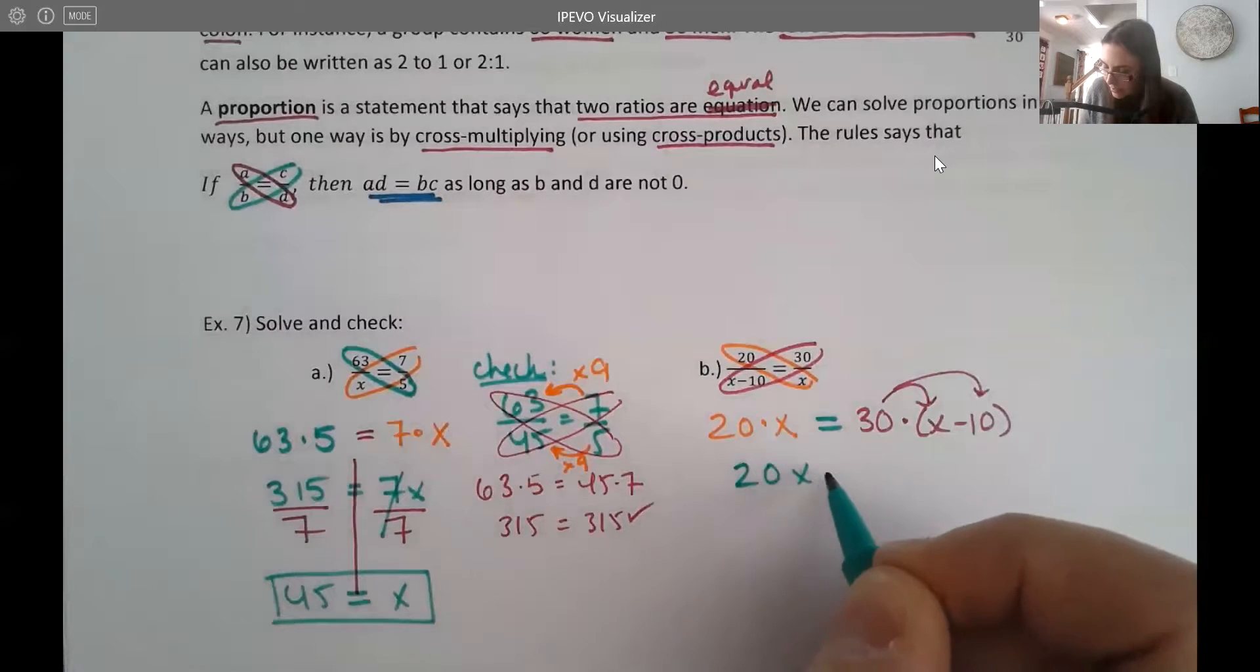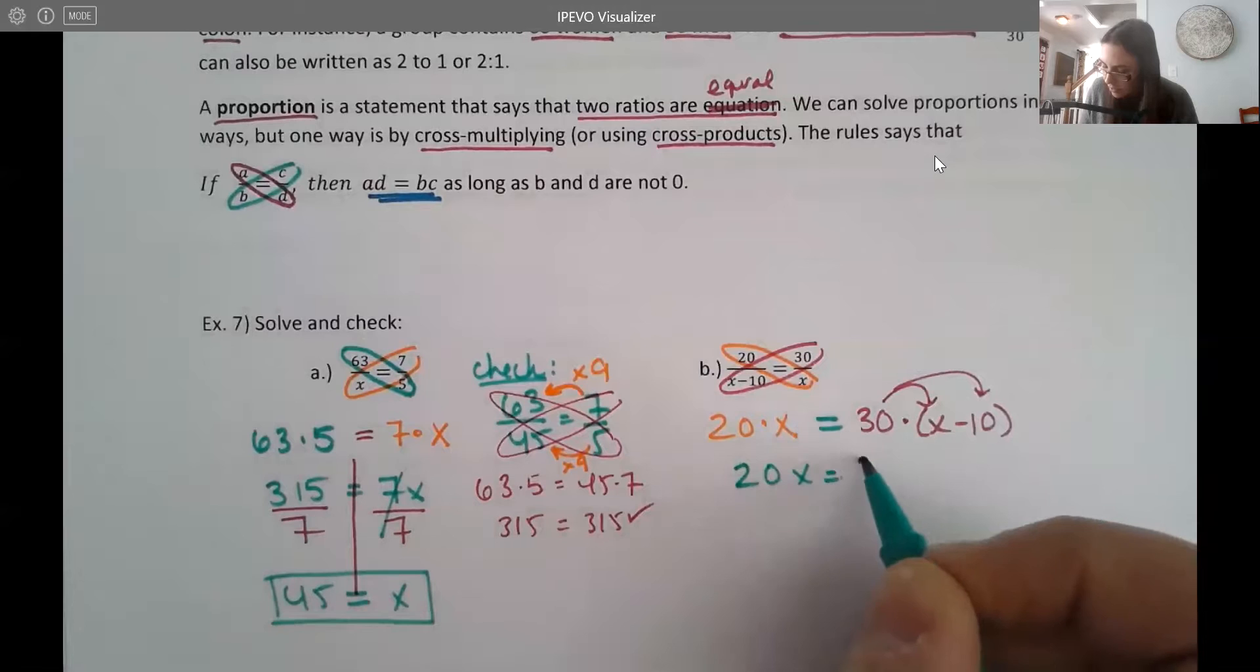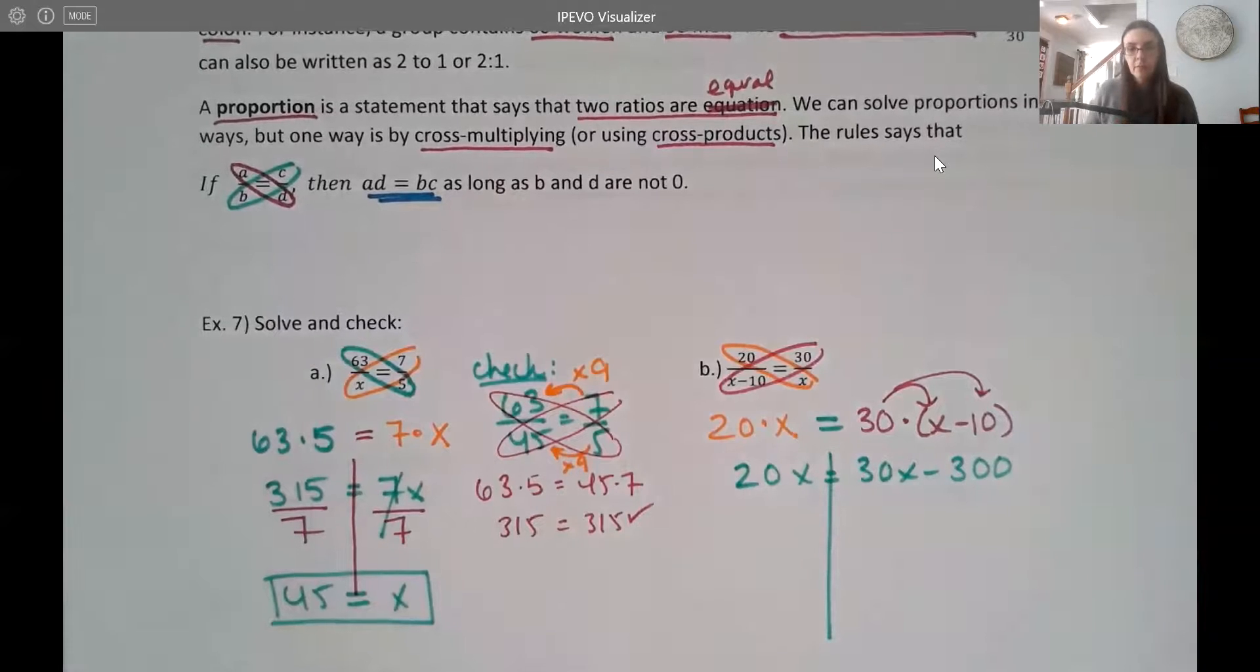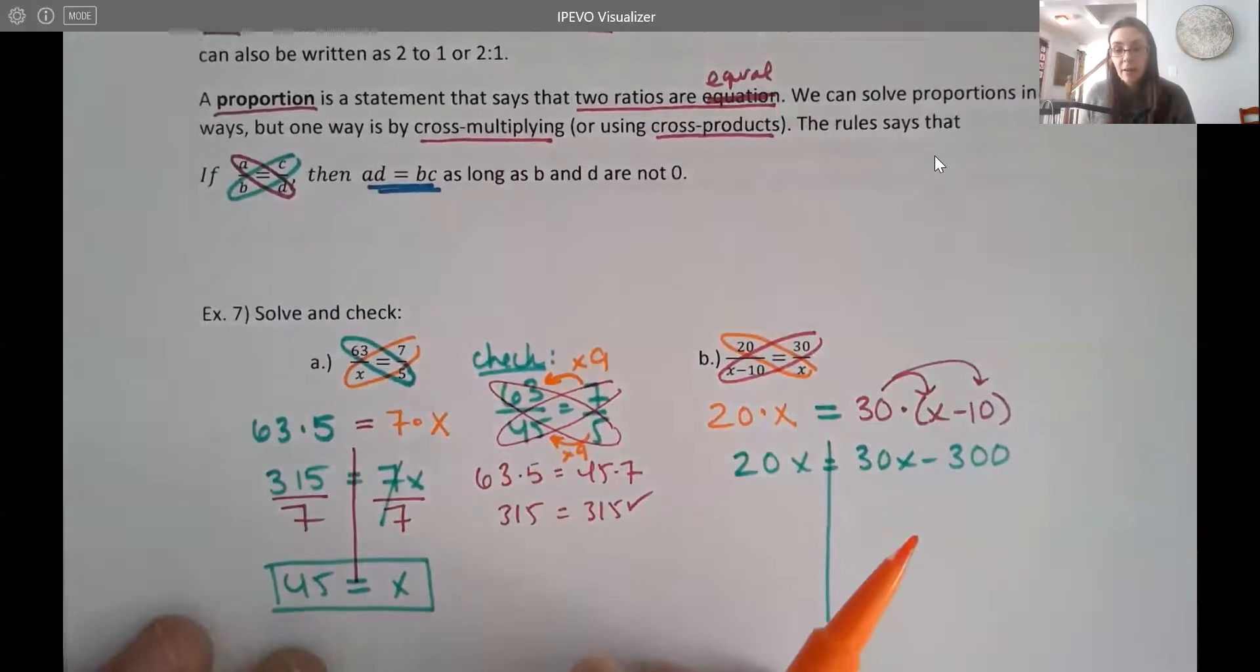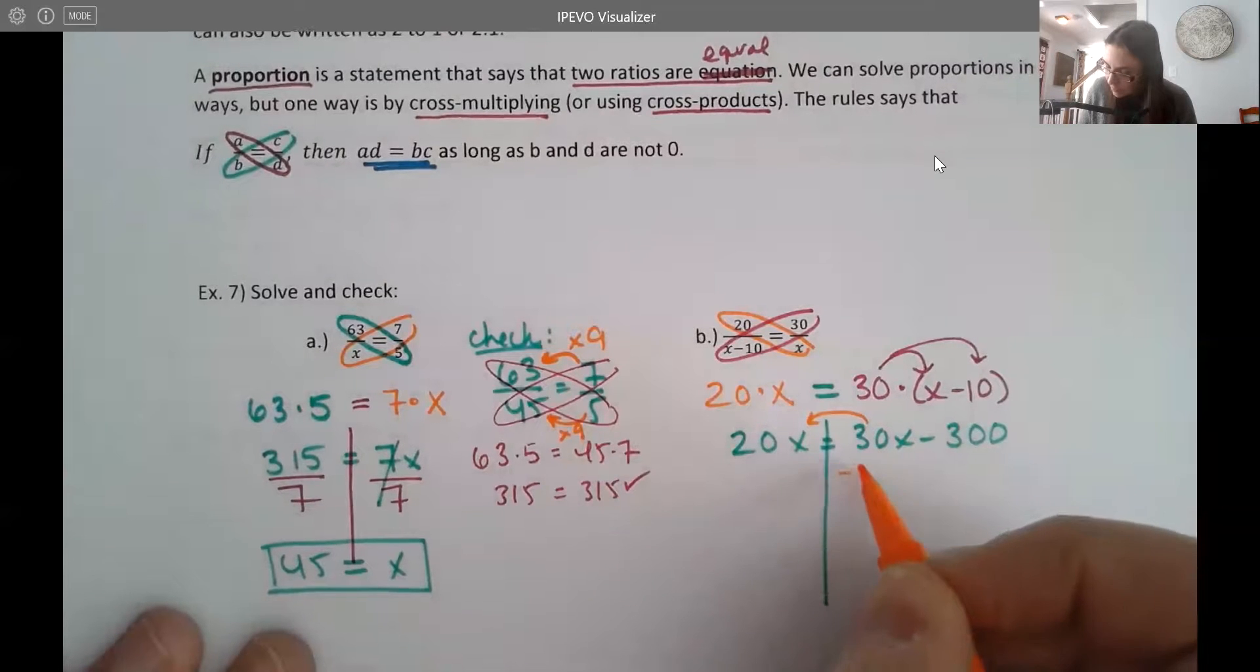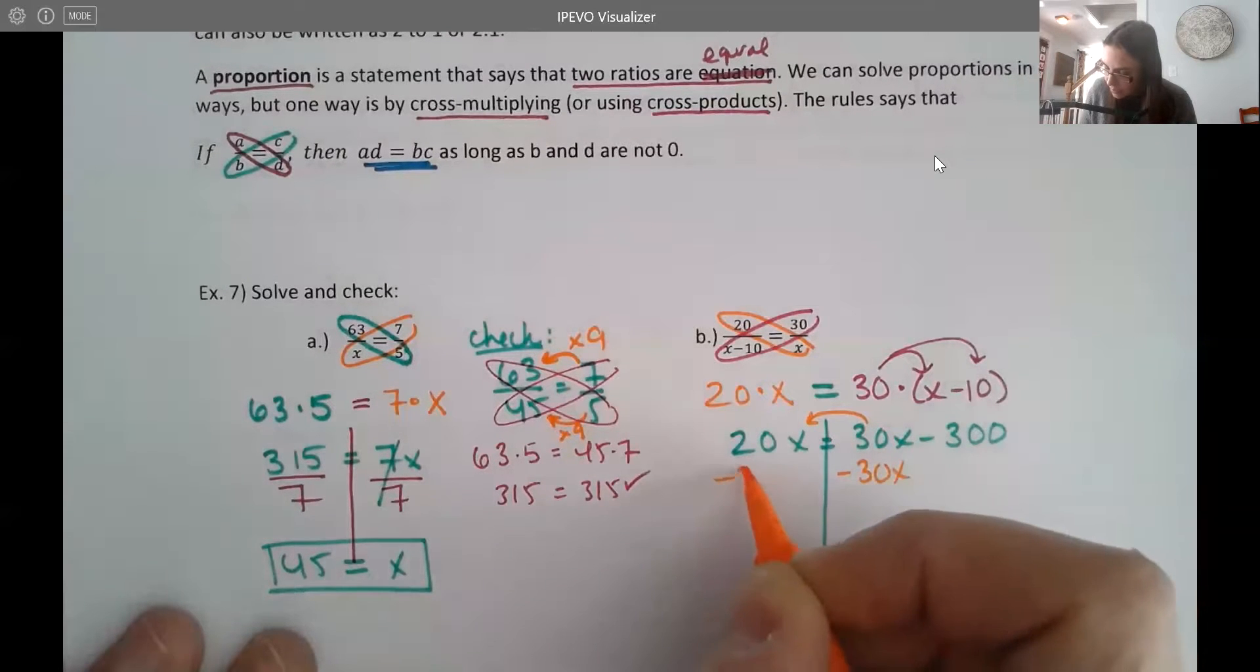So on the left, I have 20X. And then on the right, I have, let's see, 30X minus 300. Now I do want my variables together. So I have to get my like terms together. I'm going to bring my variables to the left. So I'm going to subtract 30X from both sides.